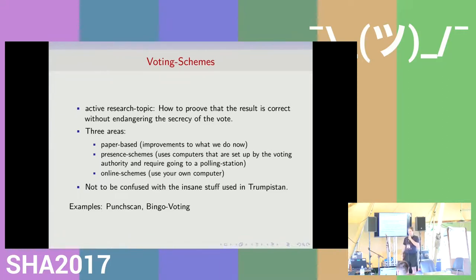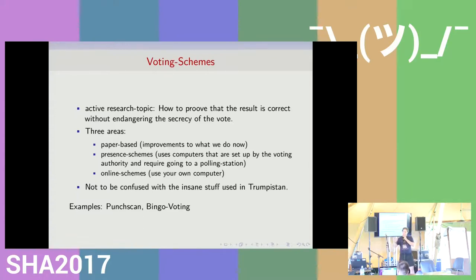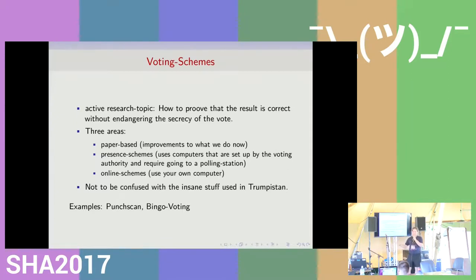The third kind is online schemes, where you just use your own computer and you have all the problems with someone looking over your shoulder while you are voting, malware on your computer, and all that stuff. For the third one there are some schemes but I didn't like any of them very much. For the second one you might look at bingo voting — one of the reasons I mentioned that is because it was also developed at KIT, and I know the people who came up with it.